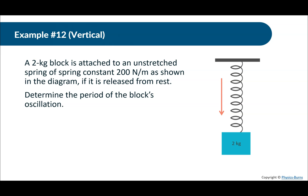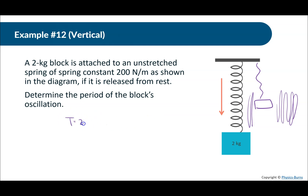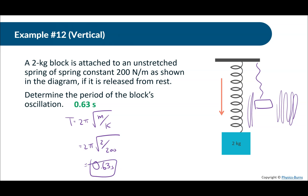A two kilogram block is attached to an unstretched spring of spring constant 200 newtons per meter. If it is released from rest, determine the period of the block's oscillation. What's going to happen is it's going to start oscillating back and forth. The formula is the same: period equals 2π times the square root of m over k. Plugging in: 2π × √(2/200), which gives us 0.63 seconds. So for it to make a complete cycle — all the way down and all the way back up — that takes 0.63 seconds.